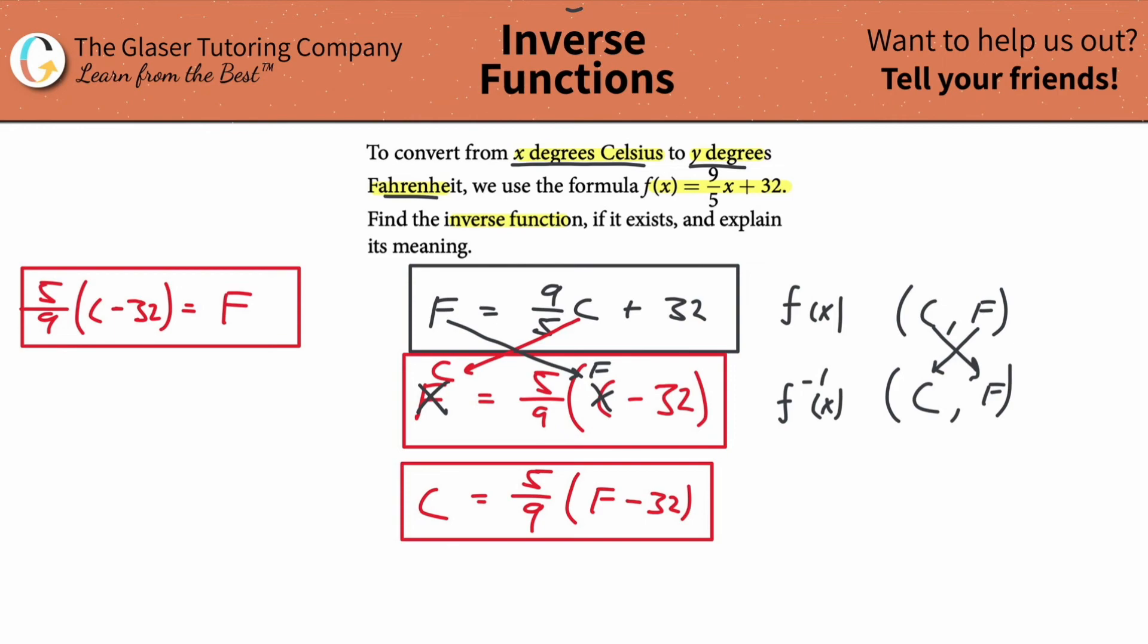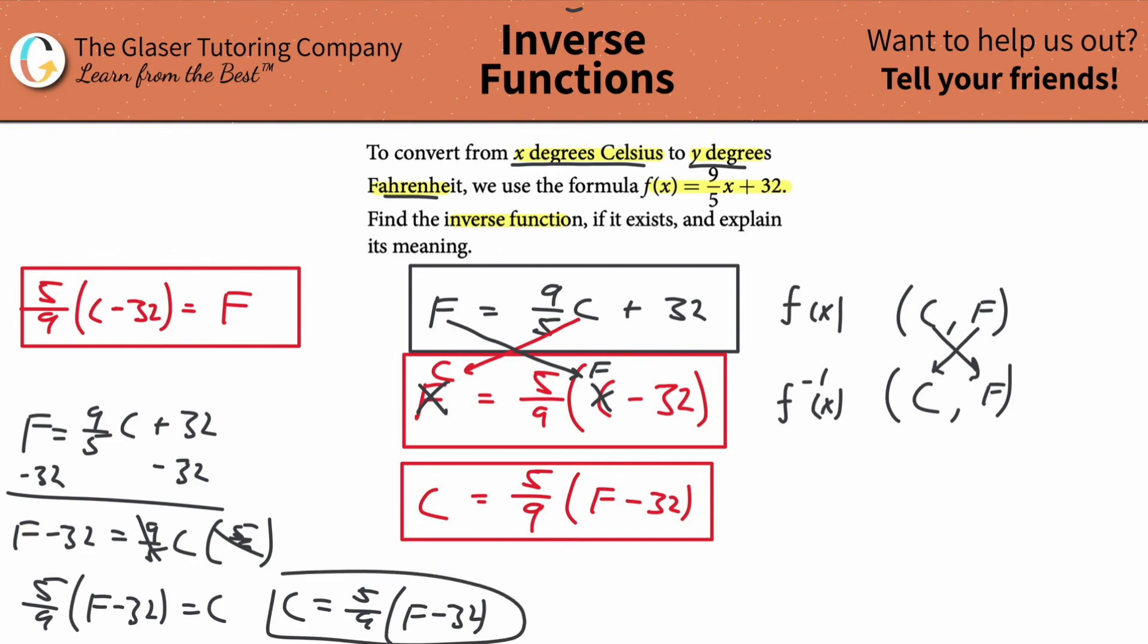Essentially, what happens is this. If I started with my original function F equals 9/5 Celsius plus 32 and I solve this for C, you subtract the 32 from both sides, you get F minus 32 equals 9/5 Celsius. Multiply both sides by 5/9 to get rid of that, so it's going to be 5/9 times F minus 32 equals C. Write the C on the left-hand side, C equals 5/9 times F minus 32, and you might say wait a second, isn't that the same thing as this? And I'm going to say yes. So what happens when you take the inverse? Basically, what you're doing is you're solving the equation for the other variable.